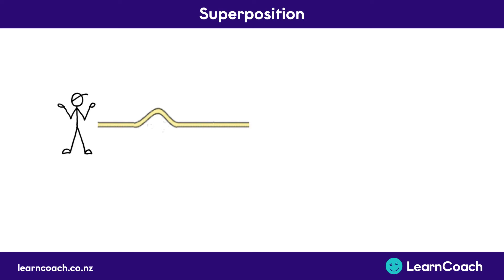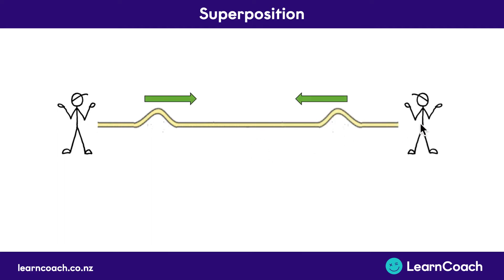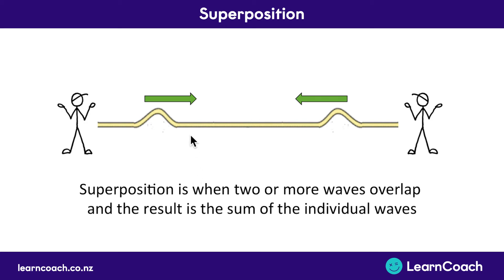This video is on a phenomenon called superposition. If you're standing there holding a rope and you flick it, you're going to get a wave that moves along that rope towards the end. But what happens if you had a friend standing on the other side who flicks the rope and has a wave going in the opposite direction? They're going to cross over, and when they cross over, that overlapping is called superposition because their positions are over the top of each other — they're superimposed. By definition, superposition is when two or more waves overlap and the result is the sum of the individual waves.